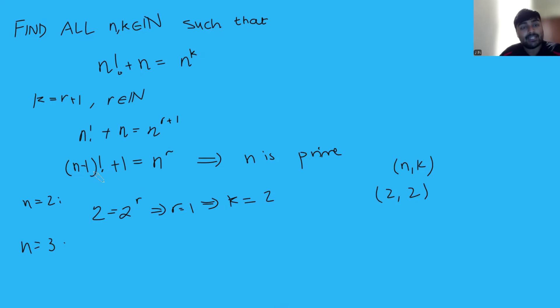What about if n is 3? Do we get any solutions there? 3 minus 1, that's 2. Factorial is 2, plus 1 is 3. So you get 3 equals 3 to the r. Again, we get r is 1, and so k is 2. So we get the solution 3, 2. What about n is 5? Well, if you get 5, you get 4 factorial, that's 24, plus 1 is 25. So you get 25 is 5 to the r. That means that r is 2, which means that k is 3. And so we get the solution 5, 3.